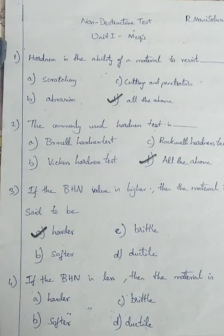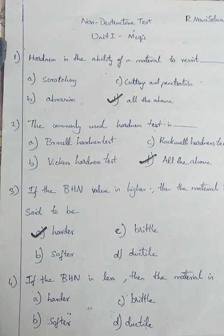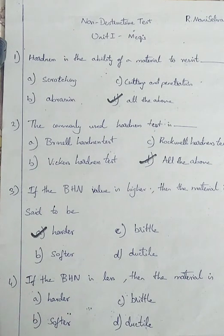If the BHN is less, then the material is said to be softer. So I am going with option B, softer, because BHN is less.